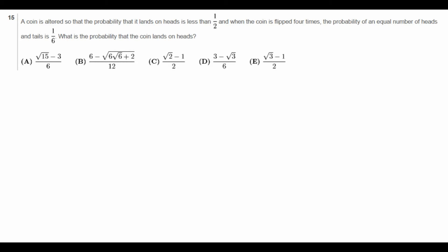Hi guys, it's Daniel here, and today we're going to do 2010 AMC 12A, problem number 15. So let's first read the problem. A coin is altered so that the probability that it lands on heads is less than one-half, and when the coin is flipped four times, the probability of an equal number of heads and tails is one-sixth. What is the probability that the coin lands on heads? And then we have a bunch of random square root expressions that usually aren't probabilities.